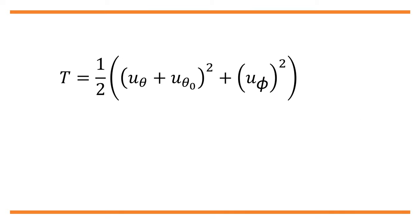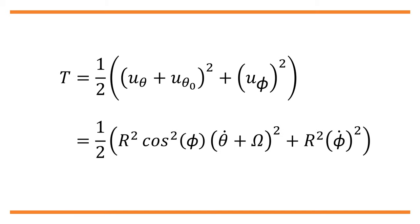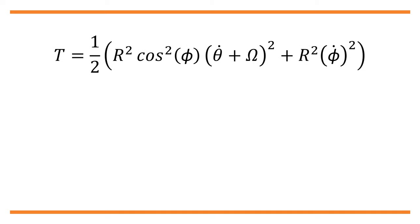The kinetic energy of the object T is then: T = (1/2) × [(u*_θ + u_0θ)² + (u*_φ)²], which equals (1/2) × [R² cos²(φ) (θ̇ + Ω)² + R² φ̇²].